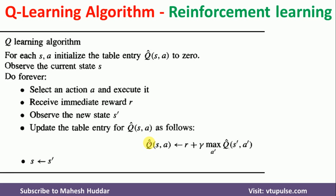Once you perform this update step, assign S' as the new current state S. Once you reach the goal state, stop. Otherwise, go back and select one action from S, execute it, receive the immediate reward, move to the new state, and update the Q-table entry again. This process repeats until you reach the goal state. To understand this algorithm better, I will take one example.